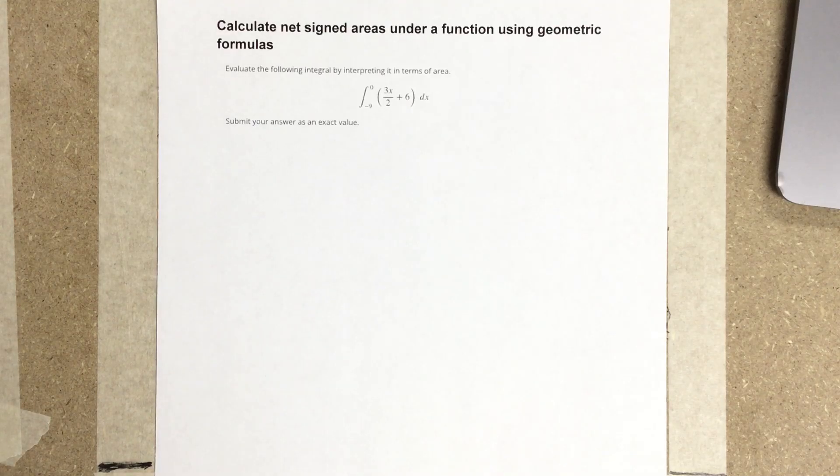In this video, we're going to calculate net signed area under a function using geometric formulas. It says evaluate the following integral by representing it in terms of area. They give you negative 9 to 0, and they give you a linear function.